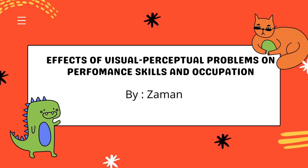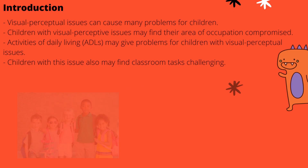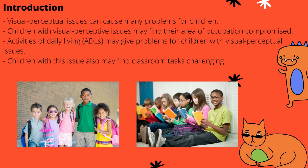Hello, Assalamualaikum. My name is Zaman from AGC and today I would like to present about the effects of visual perceptual problems on performance skills and occupation. Now let me start with the introduction. Visual perceptual problems can cause many problems for children such as the inability to use tools, cutting and more. Children with visual perceptual issues may find their area of occupation compromised, such as ADLs — activities of daily living — education and more.